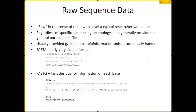Your raw sequence data — we often call it raw sequence data, though it's not truly raw in the sense that the most raw version would be all those images of the different clusters and wavelengths coming out of the Illumina sequencer. For most researchers, the raw data is just the actual sequences themselves. We always provide them in general formats, either FASTA or FASTQ, no matter what sequencing technology they come from, and we usually provide them in a compressed format. Most bioinformatics tools don't even require you to uncompress your data — many programs will automatically uncompress it themselves, so you can keep your data in a fairly small format.